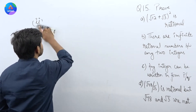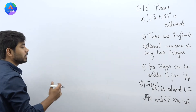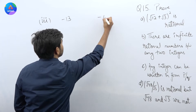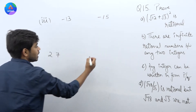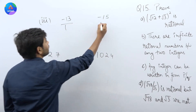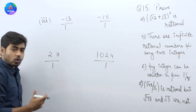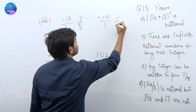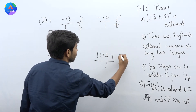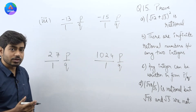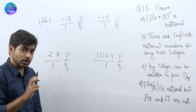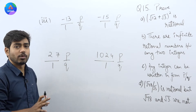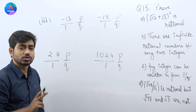Third part: any integer can be written in the form of P/Q. Let us say integers are -13, -15, 27, and 1024. अगर मैं सबको upon 1 करके लिख दूं, तो सभी numbers P/Q की form में हैं, जहाँ P और Q दोनों integers हैं और Q = 1, जो 0 के बराबर नहीं है। So any integer can be written in the form of P/Q where P and Q are integers and Q ≠ 0.